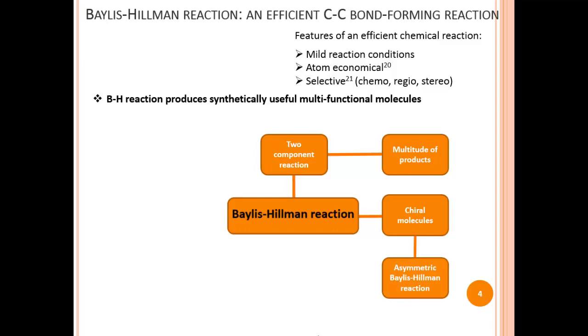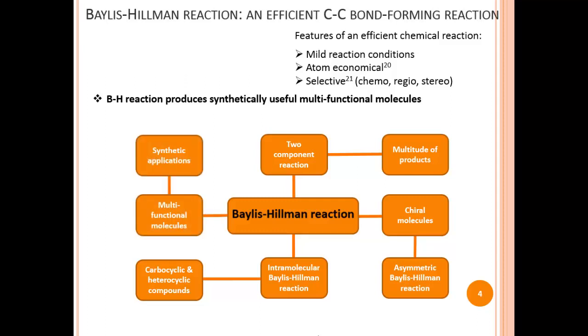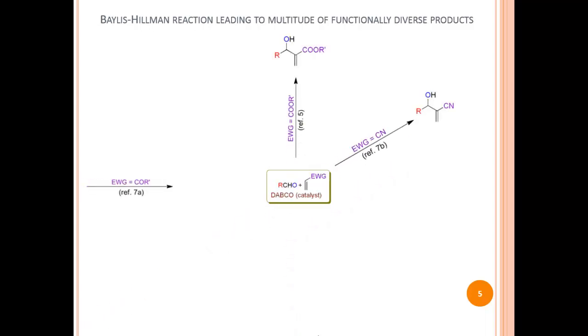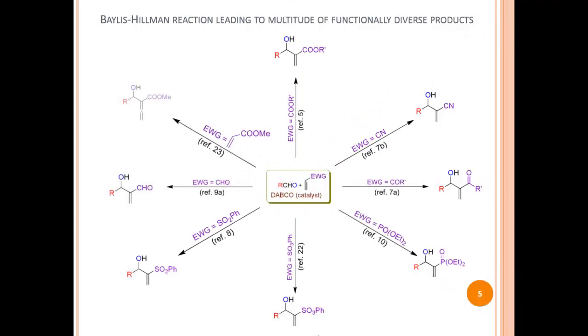Thus, asymmetric versions of this reaction are possible. If the two components — the activated alkene and the electrophile — are present in appropriate positions within a molecule, an intramolecular Bayliss-Hillman reaction is a possibility, leading to useful carbocyclic and heterocyclic molecules. By using different activated alkenes and electrophiles, a multitude of functionally diverged products can be generated, including esters, nitriles, ketones, phosphonates, sulfonates, sulfones, aldehydes, and alenic compounds.